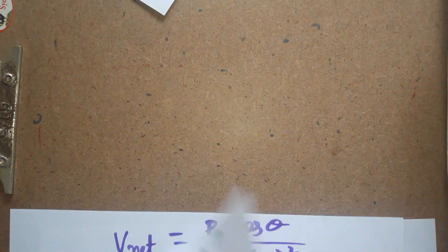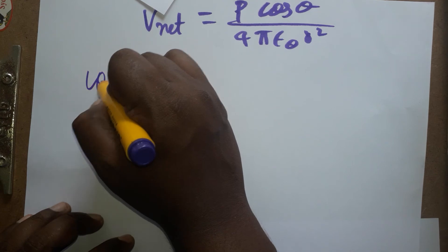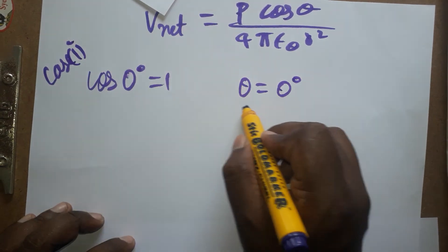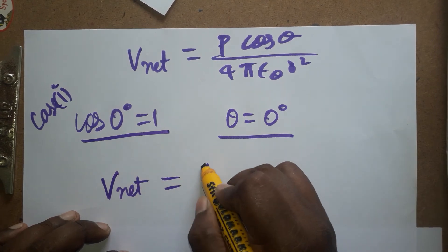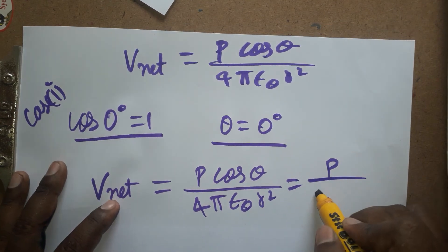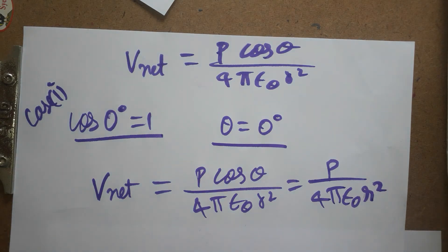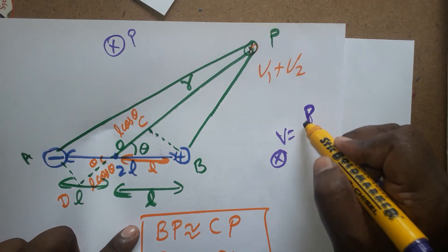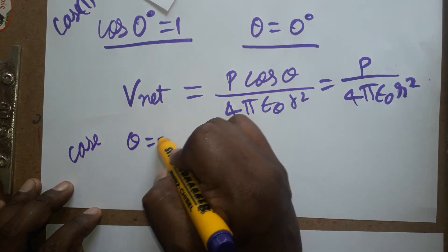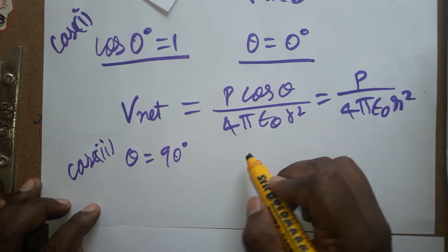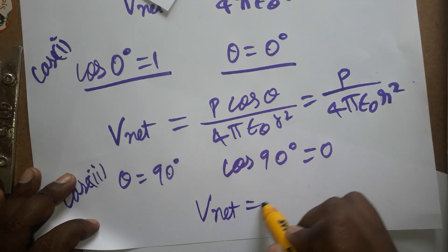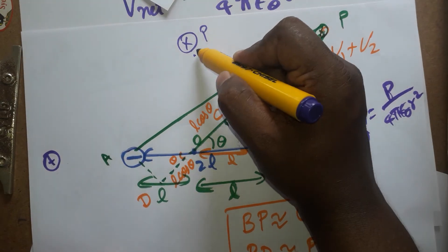Special case 1: When theta = 0 degrees, cos 0 = 1, so V_net = p / (4πε₀ · r²). This is the net voltage at the axial line. Special case 2: When theta = 90 degrees (equatorial line), cos 90 = 0, so the entire equation becomes 0. The net voltage at the equatorial line is 0.